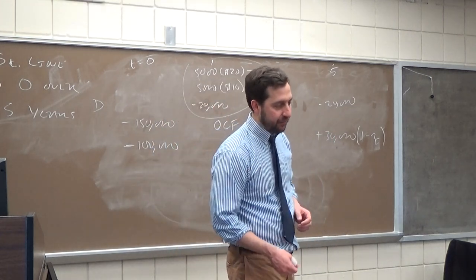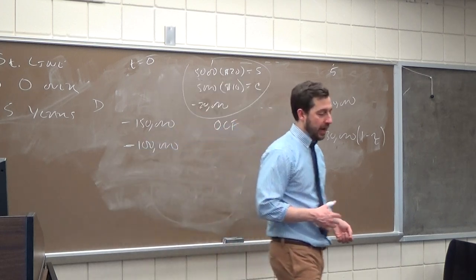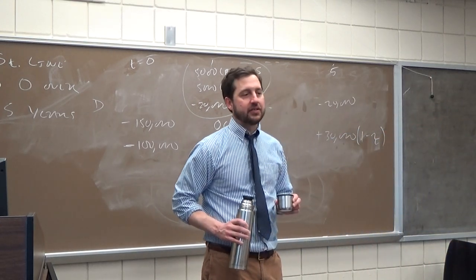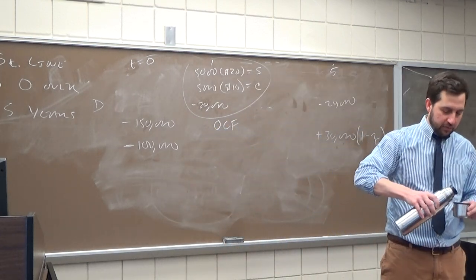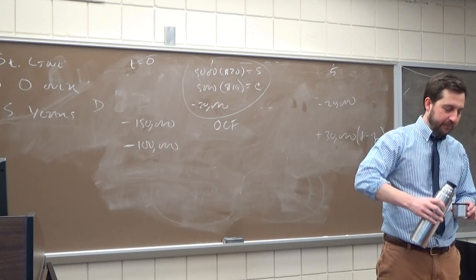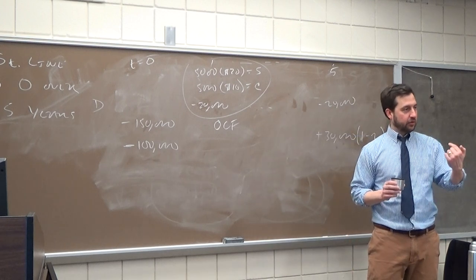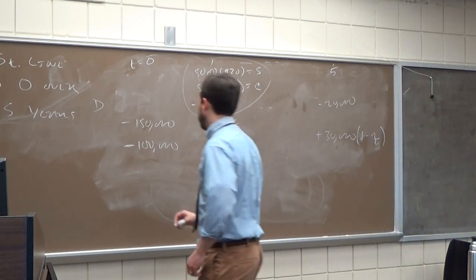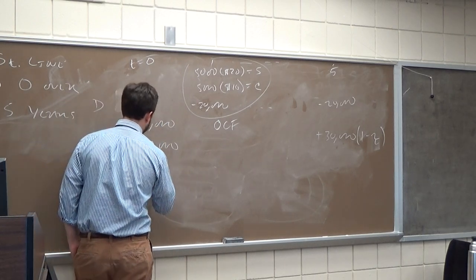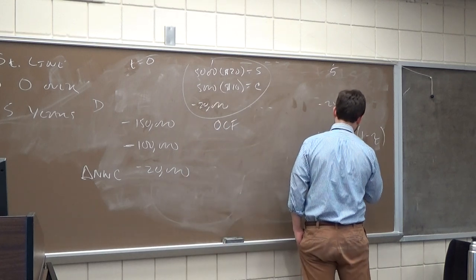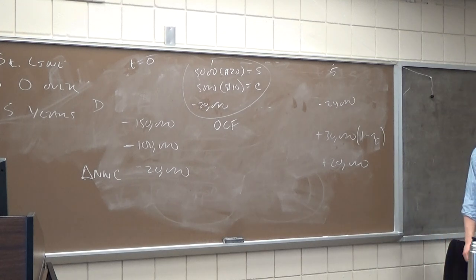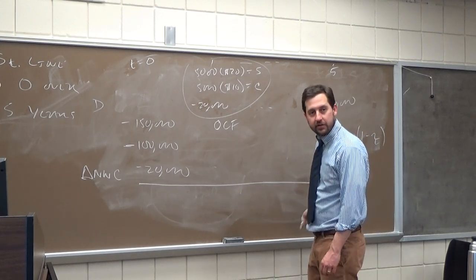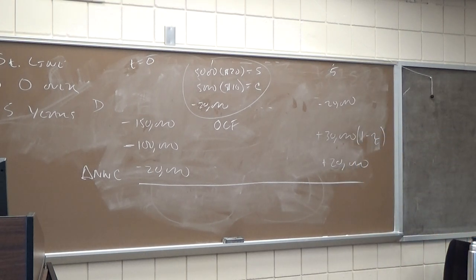The only remaining item is networking capital. On the exam I'll simplify this: there's a $20,000 cash outflow for networking capital at time zero, and you recover it entirely in year five as a $20,000 inflow. So you'll have a line for change in networking capital: negative $20,000 at time zero, positive $20,000 at year five. Then you sum all cash flows per year, discount them back at the discount rate, and calculate net present value.